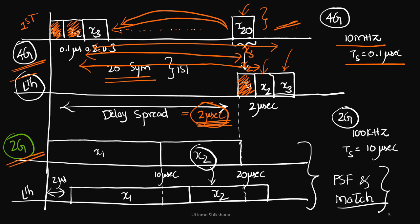But let us consider 2G. In case of 2G, the bandwidth is 100 kilohertz, symbol duration is 10 microseconds. So this is first symbol 10 microseconds, this is second symbol. Now this first symbol is delayed by 2 microseconds in the last one, and you see that it is coming like this.